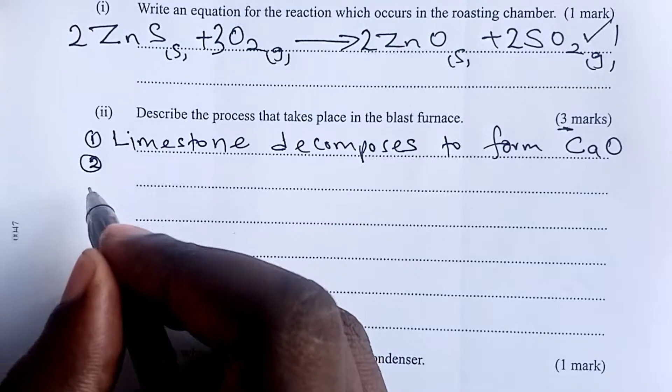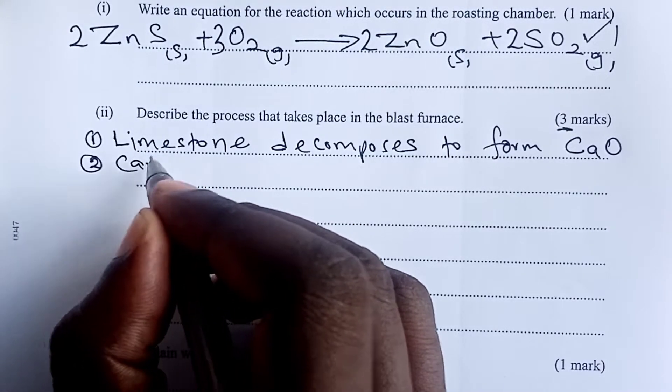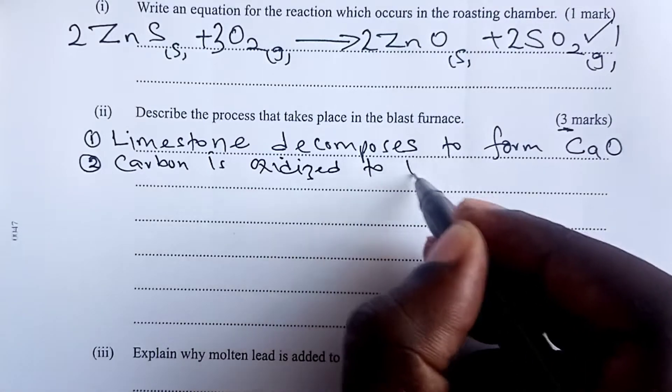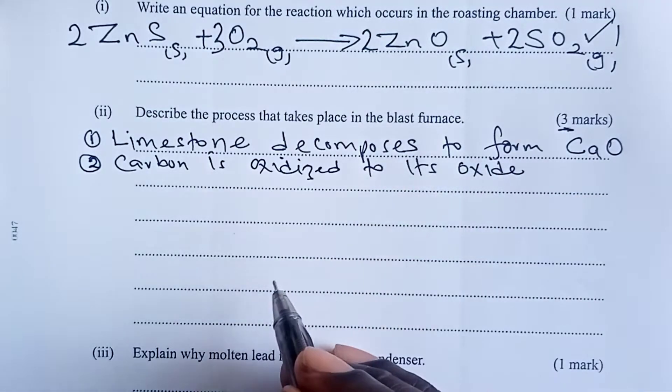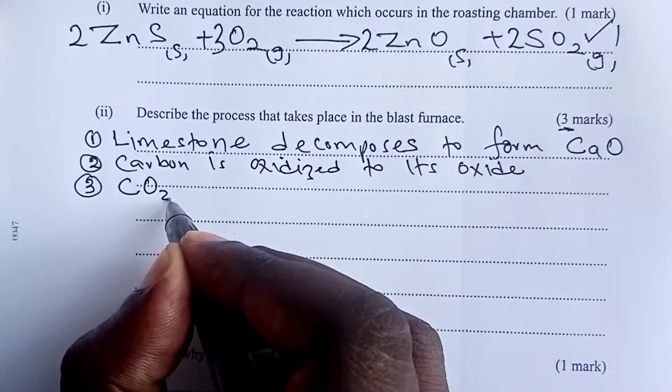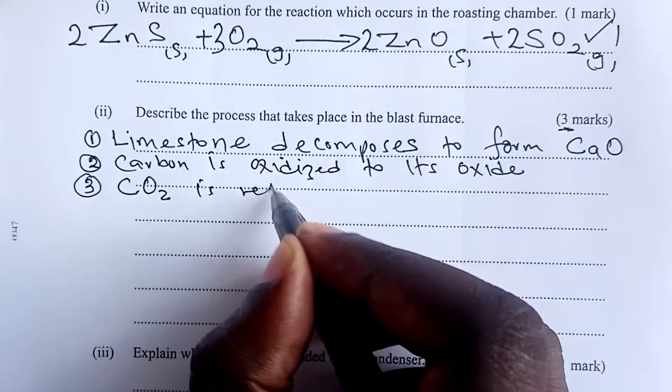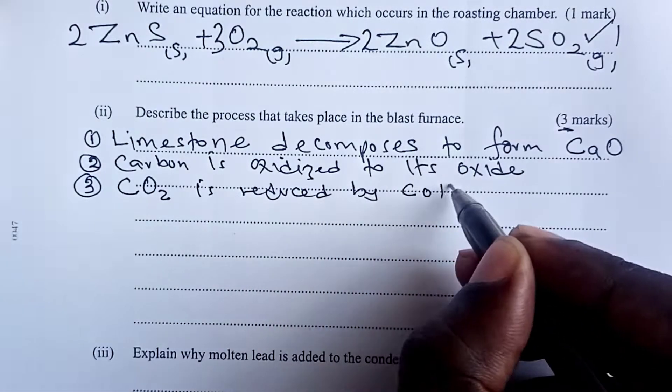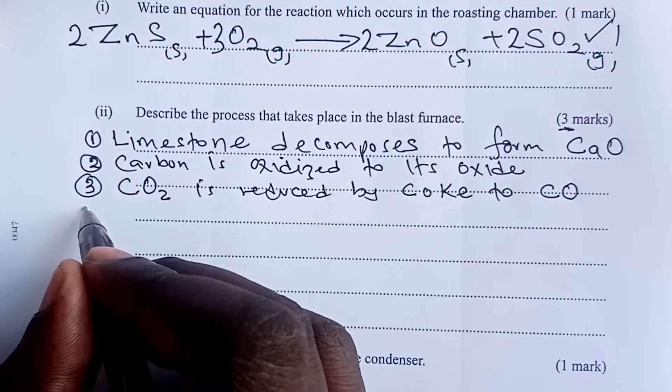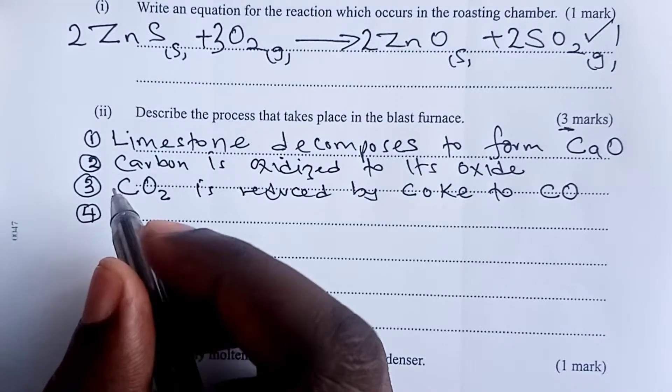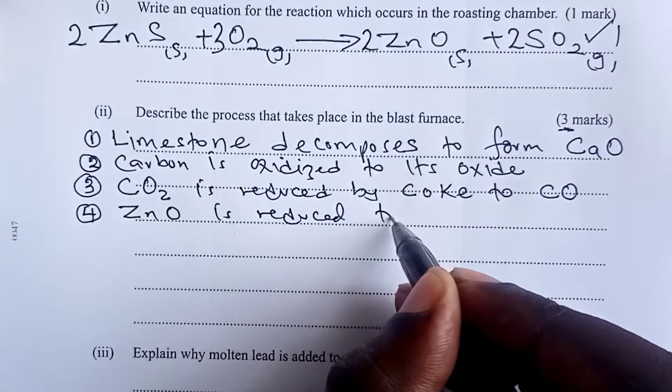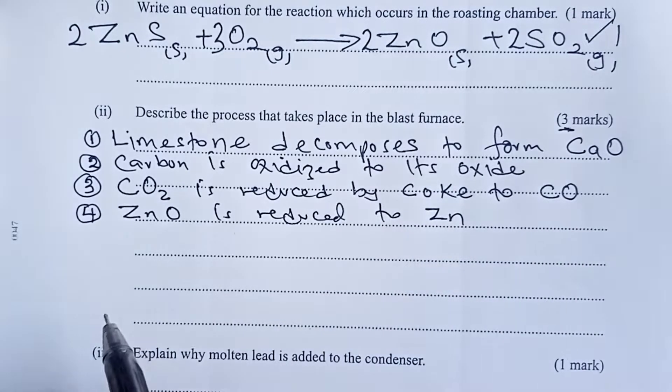The second process that takes place in the blast furnace is that carbon is oxidized to its oxide, carbon-4-oxide. Third step is that the carbon-4-oxide is reduced by coke to form carbon-2-oxide. The fourth process that takes place is that zinc oxide is reduced to zinc metal, and this reduction is by carbon-2-oxide.